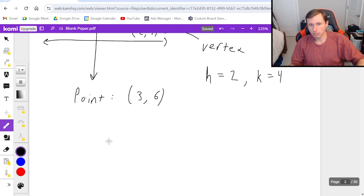So when I plug in my formula, it's y equals a times the quantity x minus 2 squared plus 4. And instantly, I'm almost done the problem already. I just need to find out what a is. This is the hard part.